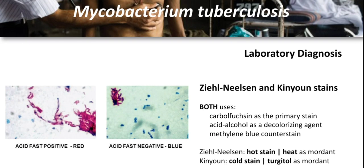For staining techniques: the classic carbol-fuchsin stain — the Ziehl-Neelsen stain — requires heating of the slide for better penetration of the stain into the mycobacterial cell wall, hence it is known as the hot stain procedure. With Ziehl-Neelsen staining, Mycobacterium species appear red or have a red-blue beaded appearance, whereas non-mycobacteria appear blue due to the secondary stain methylene blue. The Kinyoun acid-fast stain is similar to Ziehl-Neelsen but no heat is used — this is known as the cold stain procedure. Typical acid-fast bacilli appear as purple to red, slightly curved or short-to-long rods, usually 2–8 micrometers in size, and may appear beaded or banded.